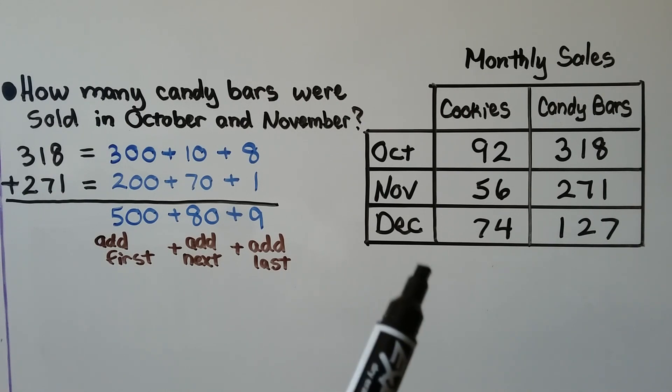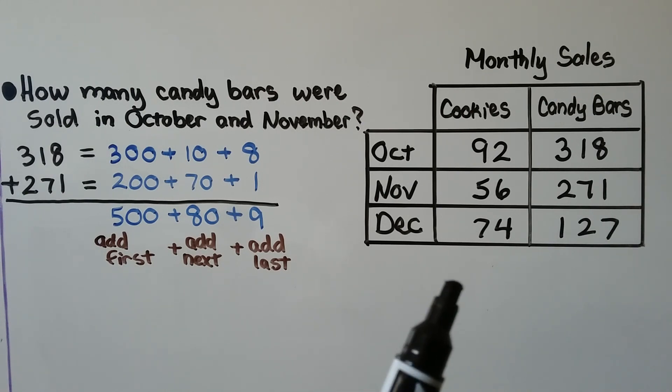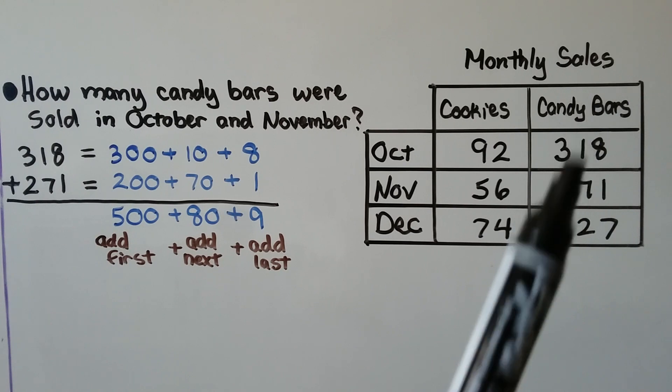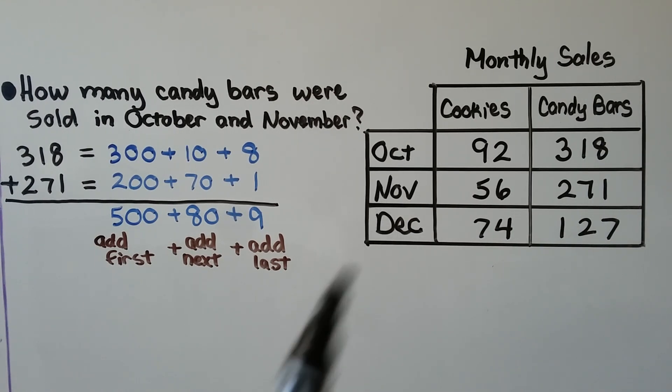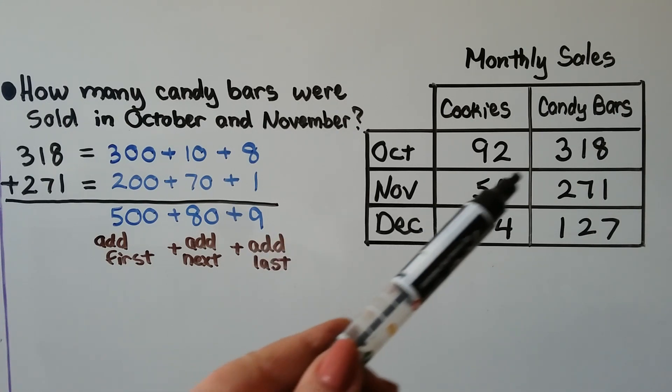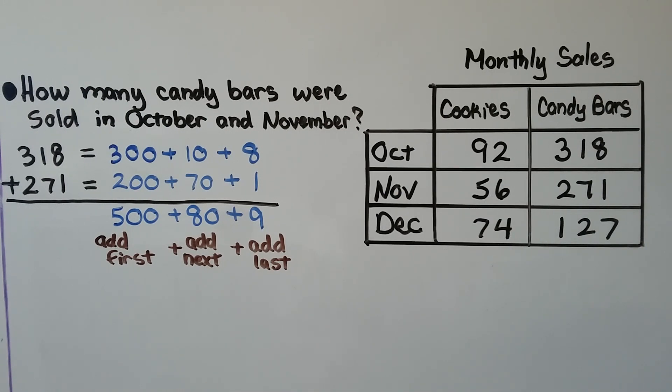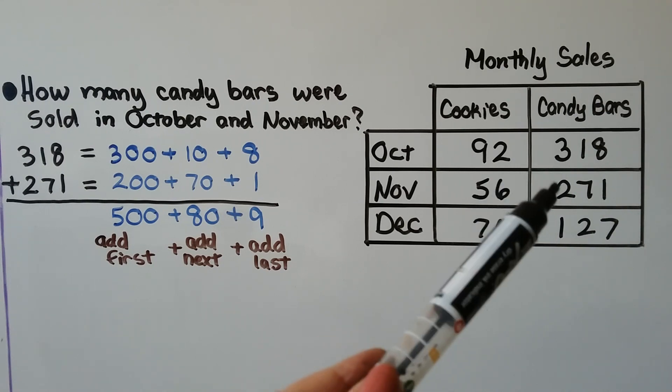Here we have our table from our previous video. It's monthly sales of cookies and candy bars in October, November, and December. So how many candy bars were sold in October and November? Well, in October, there were 318. And in November, there were 271. We need to add these two amounts.